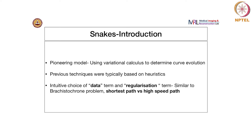Why is this so important? Because previous techniques were all typically based on heuristics — a bunch of rules that you put together and hope that it worked. But here, this is used for segmentation, and the rules actually came out of variational calculus, by putting together a correct choice of data terms, a loss function, and regularization terms in the functional. We arrived at a curve propagation equation without having to explicitly specify rules.